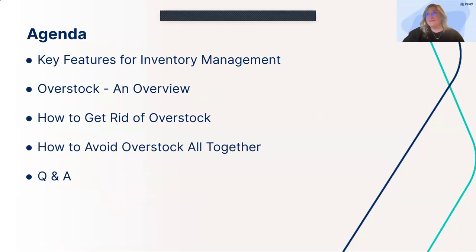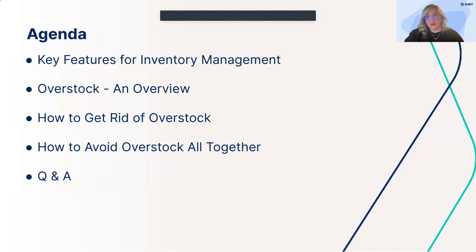For the agenda today, we're going to go over a few different things throughout this call. There will be plenty of time for Q&A, so if you have questions, don't be afraid to list them in the Q&A feature. First we'll go through key features for inventory management, starting with the basics. We're going to talk about overstock and give you a full overview, then get into how to get rid of overstock, how to avoid it altogether, and then we'll get into our Q&A.